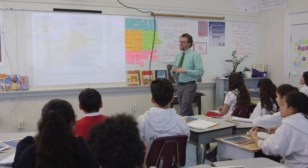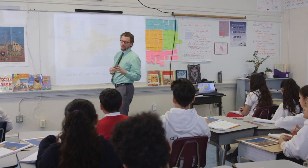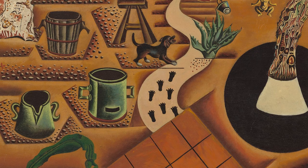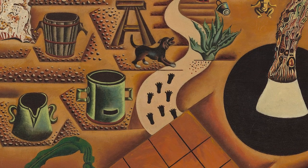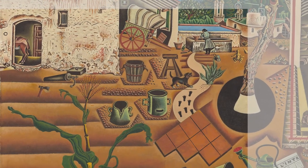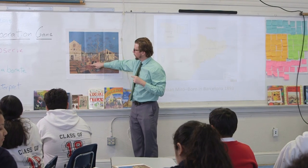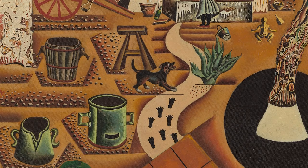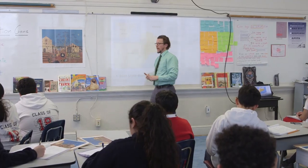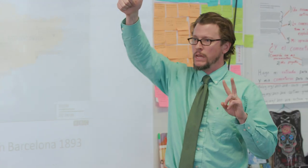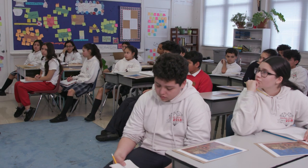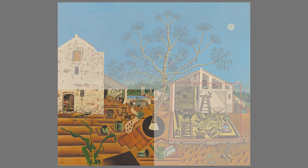Let me give an example of what it looks like to elaborate. Can someone raise their hand and give me one observation? — Footsteps. — Which quadrant? — Bottom left. — So if I was going to elaborate, I might say: I see footprints that appear to be leading up a path. I'm adding a bit to that observation. You have two options: elaborate on that observation, or give another observation from that same quadrant.